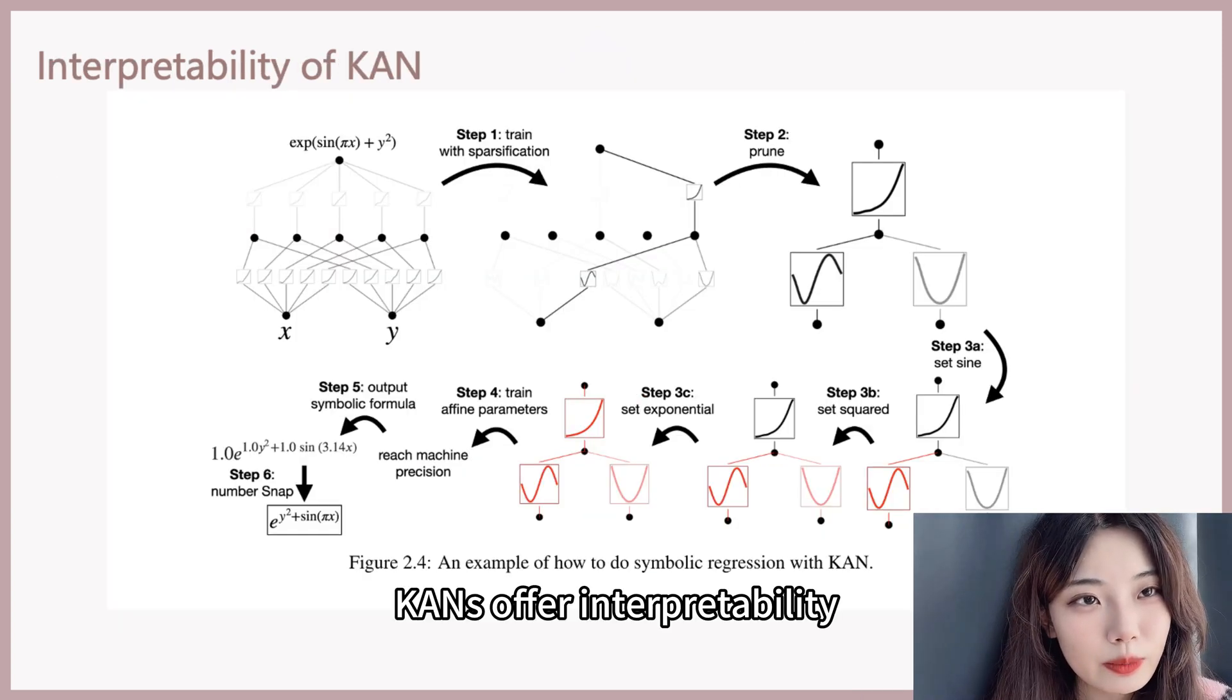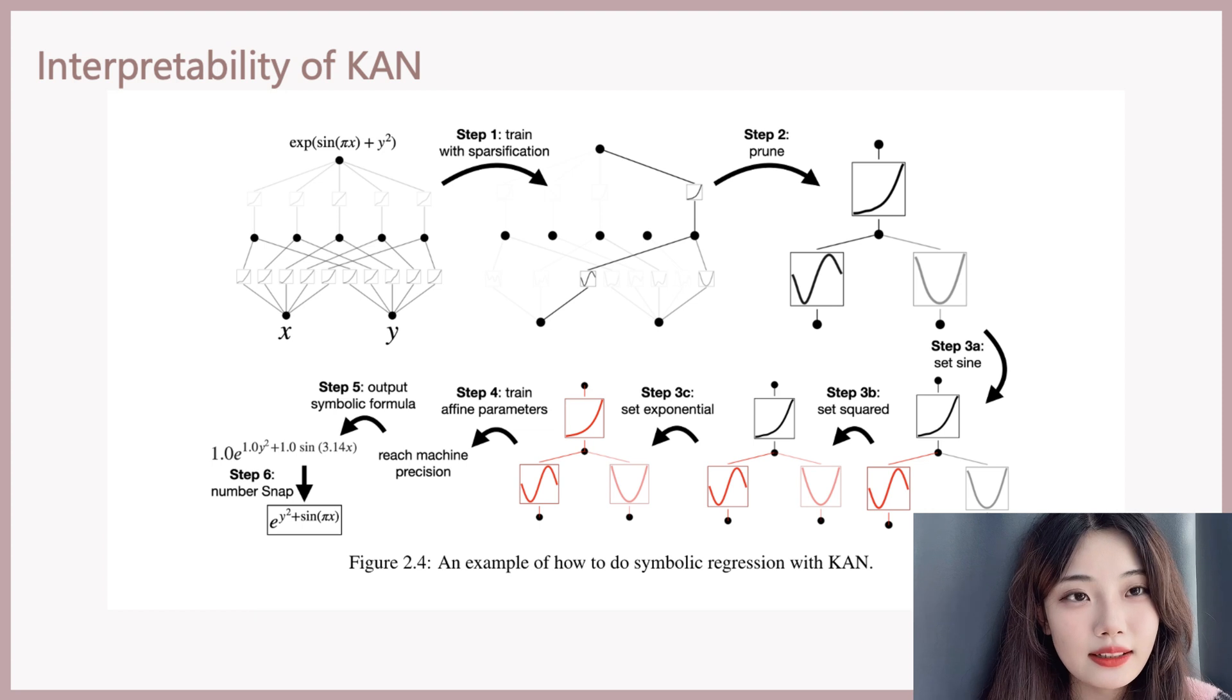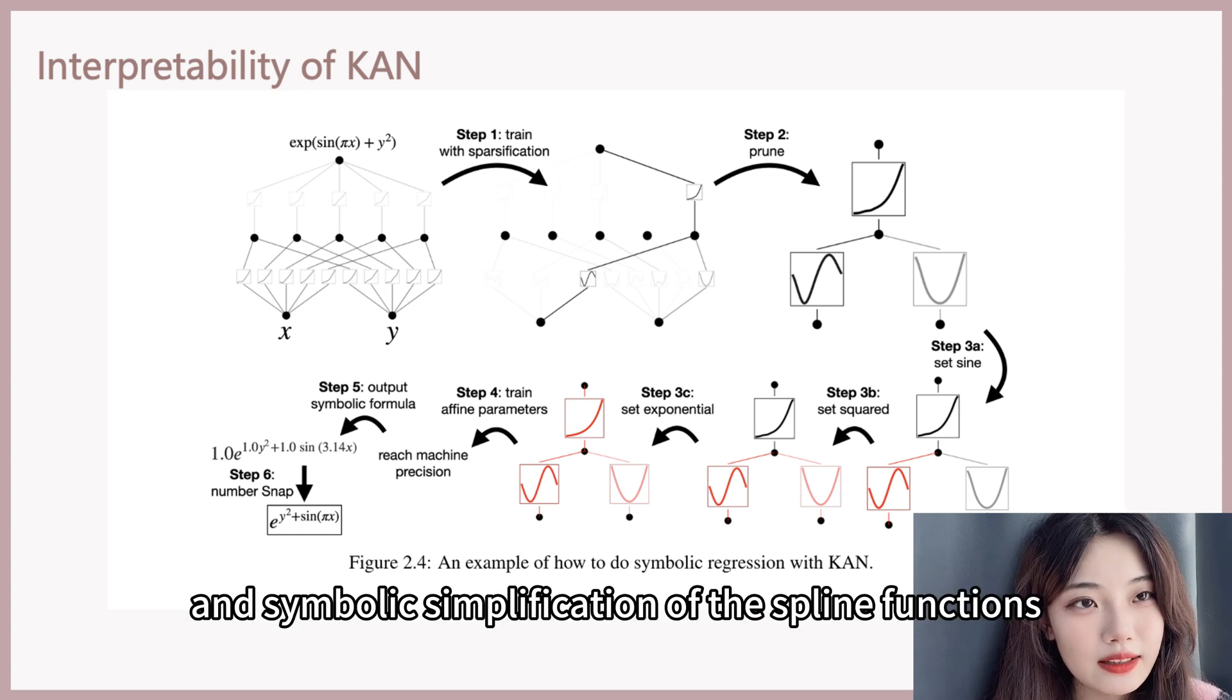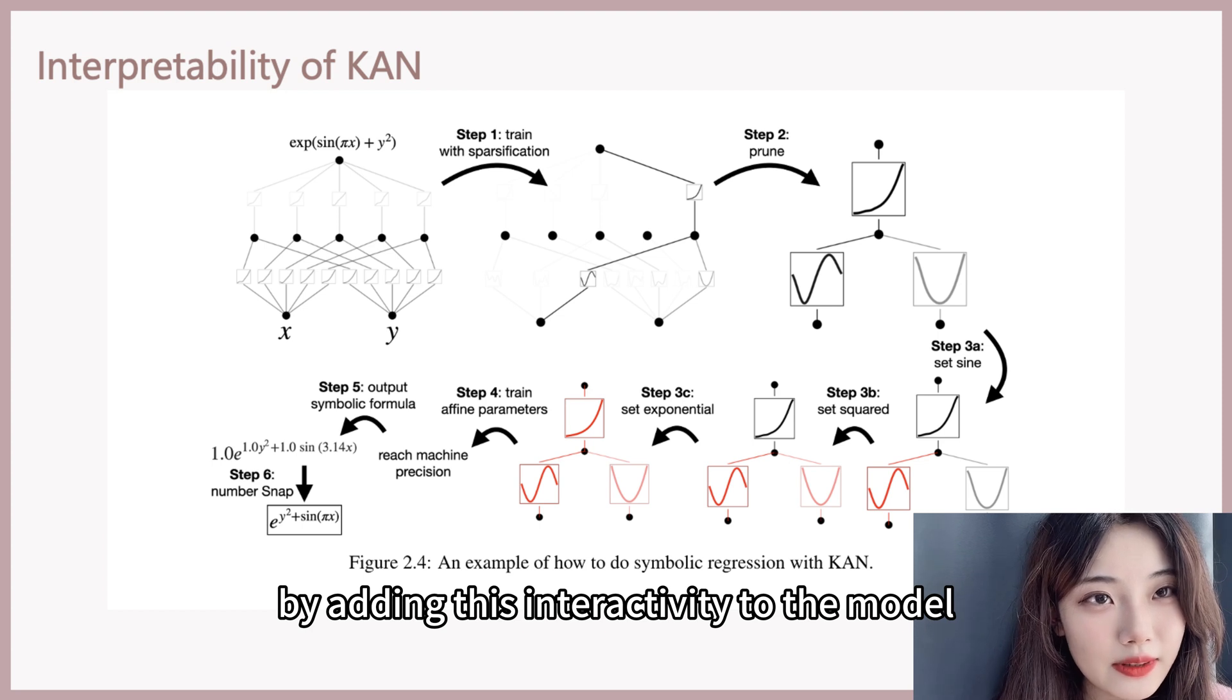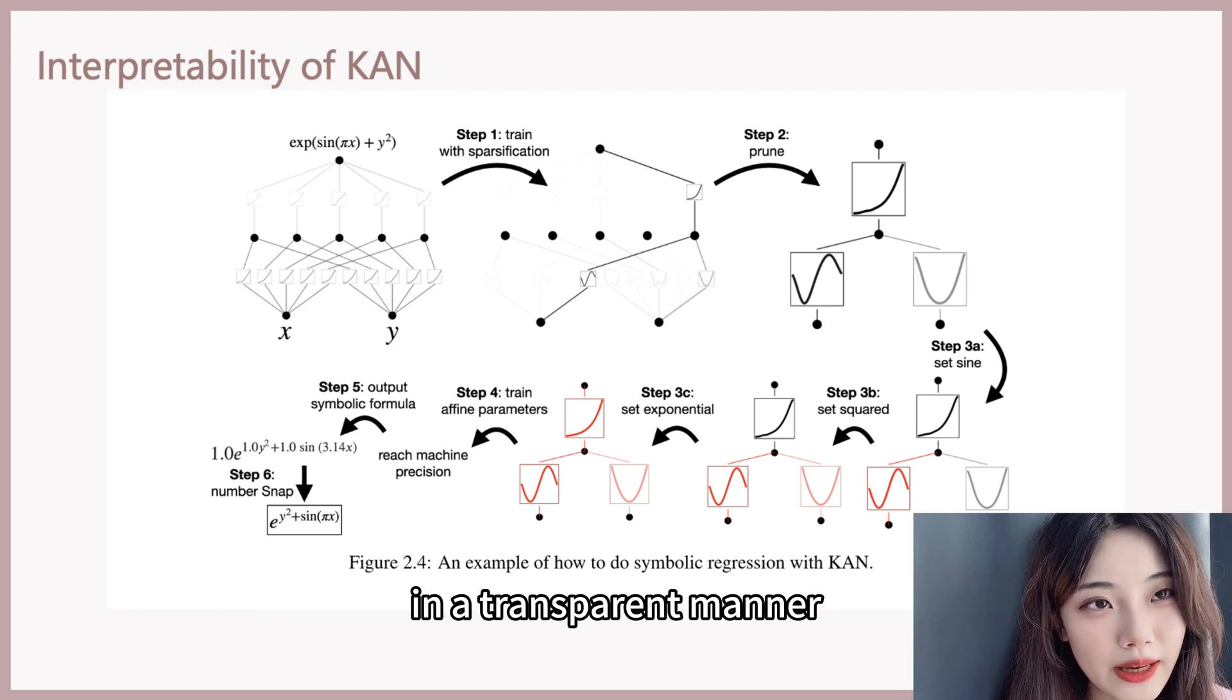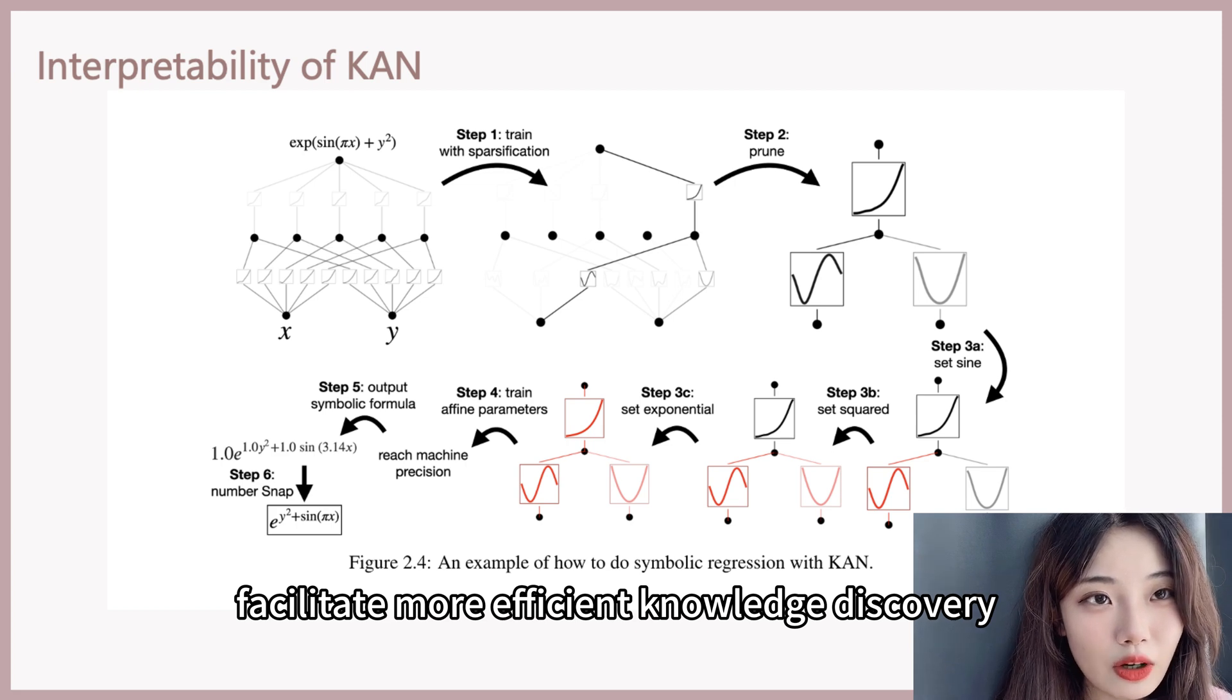KAN offers interpretability and interactivity that MLPs cannot provide. The interpretability of KAN is highlighted through techniques like sparsification, pruning, and symbolic simplification of the spline functions. By adding this interactivity to the model and visualizing its decision-making process, KAN are able to uncover known relations in a transparent manner. This means that KAN could facilitate more efficient knowledge discovery.